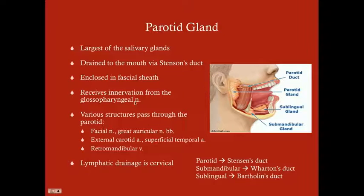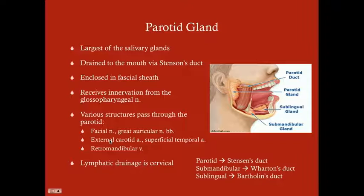It receives innervation from the glossopharyngeal nerve — autonomic sympathetic innervation for creating saliva. Various structures pass through the parotid, which is important when doing parotidectomies. Most importantly is the facial nerve, which is usually implicated in parotid surgeries. The great auricular nerve branches pass through it as well. The external carotid artery, superficial temporal artery, and retromandibular vein are in the vicinity. Lymphatic drainage is to the cervical nodes.